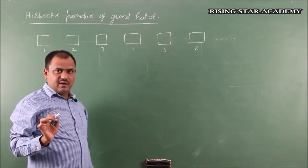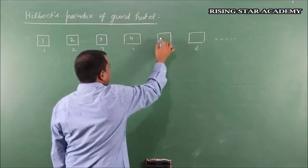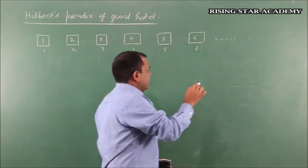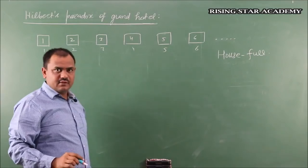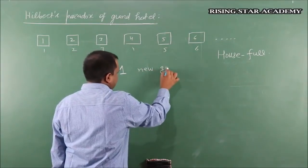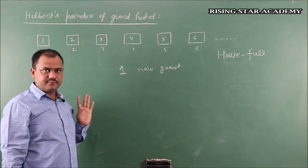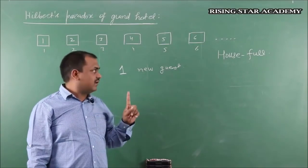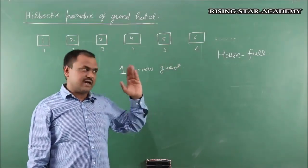Every room in this hotel is already occupied by a guest — guest number one, two, three, four, five, six and so on. As many rooms as there are, that many guests are there. So we can say this hotel is house full. Now suppose one new guest arrives and we want to give this new guest a room in this very hotel. Some students say: send him to the last room! But first of all there is no last room, and secondly there is no empty room.